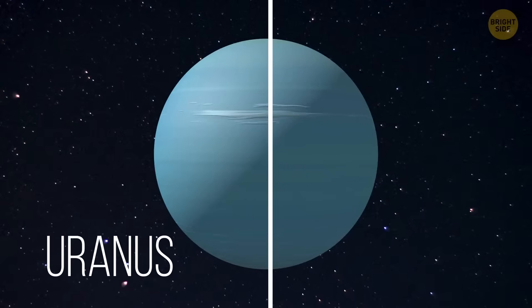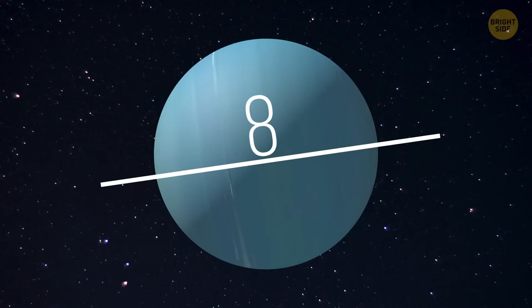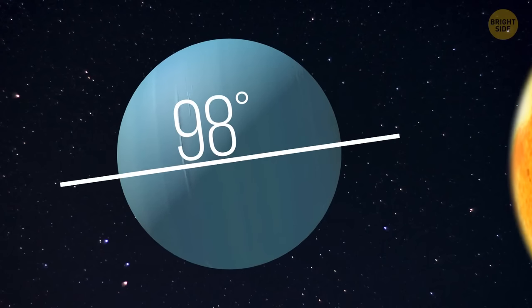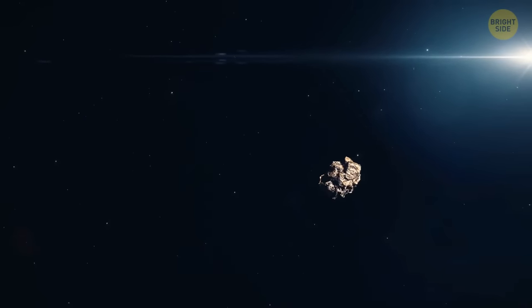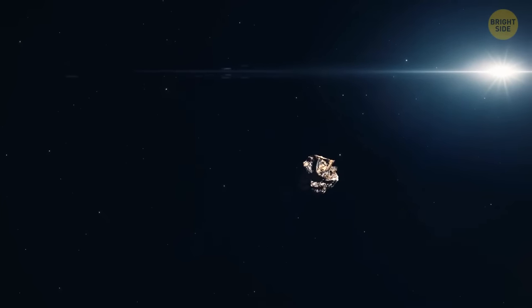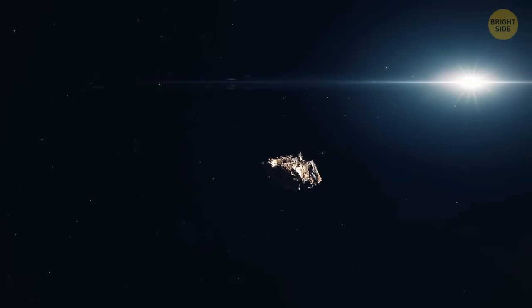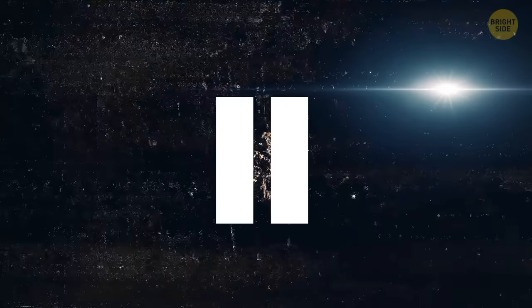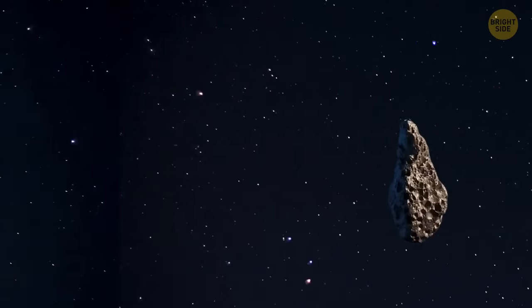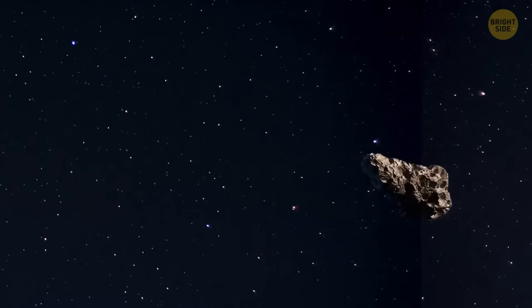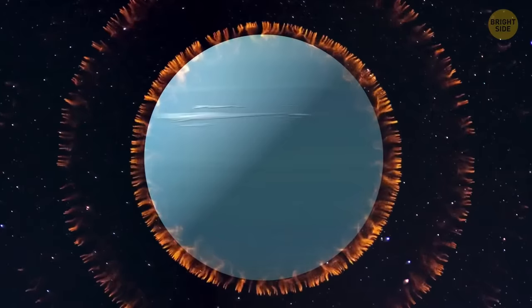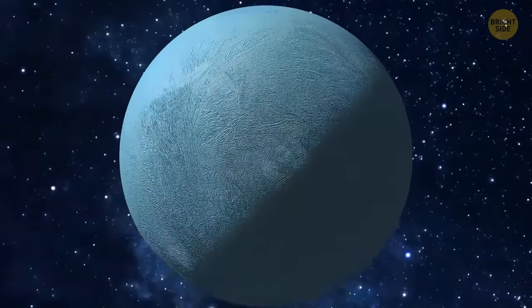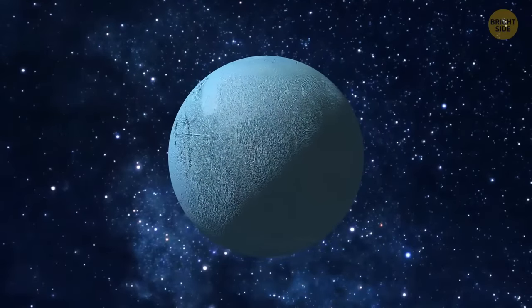Uranus' rotation axis is 98 degrees relative to the plane of the solar system, which basically means the planet spins on its side. Scientists believed a large object fired through space and knocked into Uranus, causing it to tilt. But here's a problem: Uranus' moons are covered in ice. A collision so powerful that it made the planet tilt would have disrupted the moons' movement and position, but they seem relatively untouched and all the ice covering them is still intact.